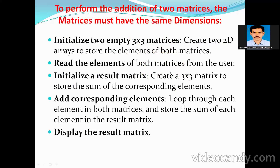This is the algorithm to perform addition of two matrices. First, initialize two empty 3×3 matrices — A array of 3×3 and B array of 3×3. Then read the elements of both matrices using an outer loop for rows and an inner loop for columns.